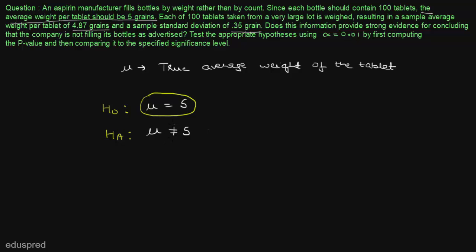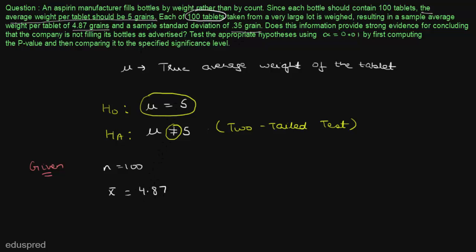Note that the alternate hypothesis has a not equal to sign, so this means that this is a case of a two-tailed test. Now let us write all the information that is given: n is equal to 100, the sample average weight per tablet x-bar is equal to 4.87, the sample standard deviation s is equal to 0.35, and the value of alpha is 0.01.